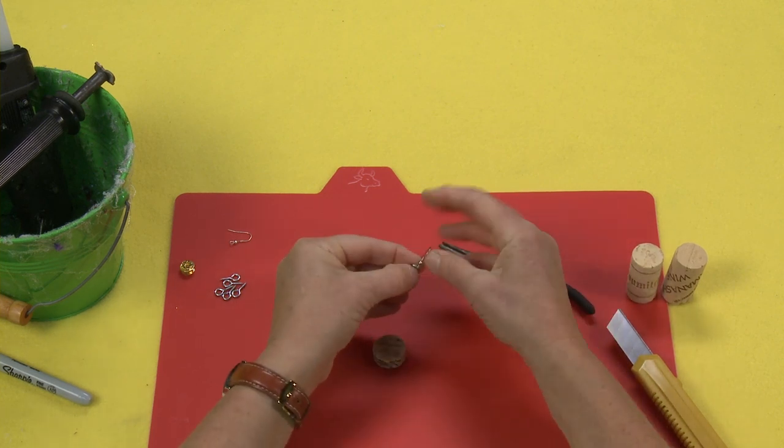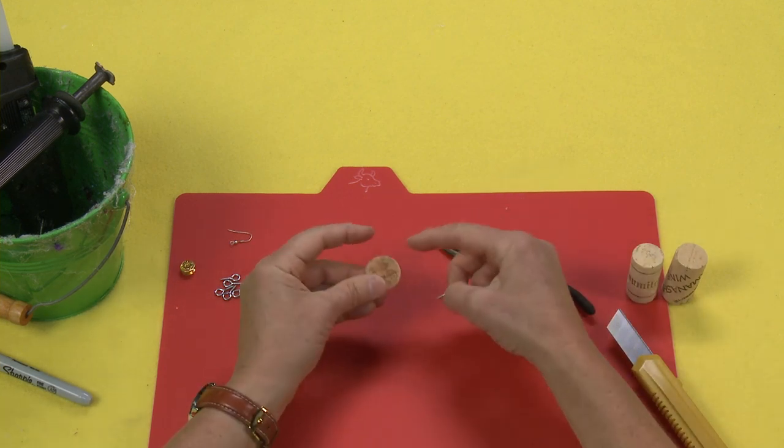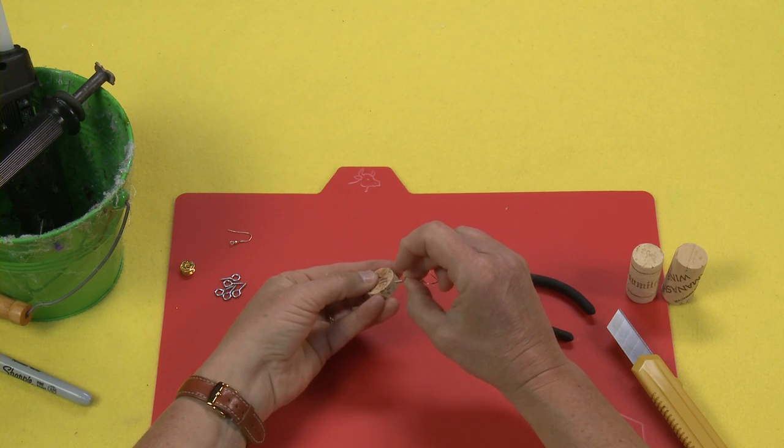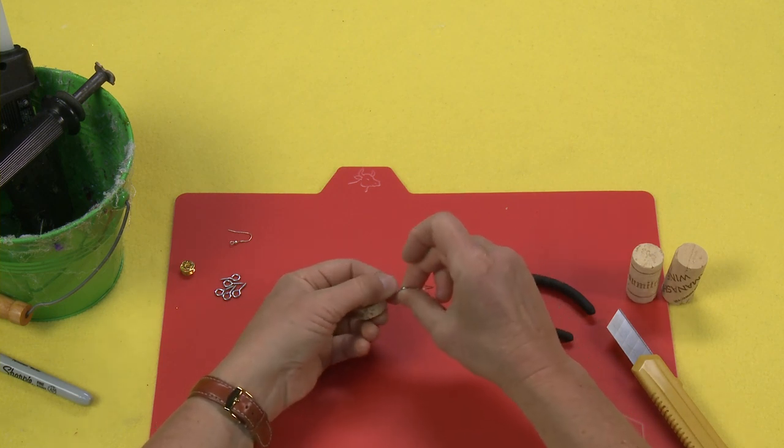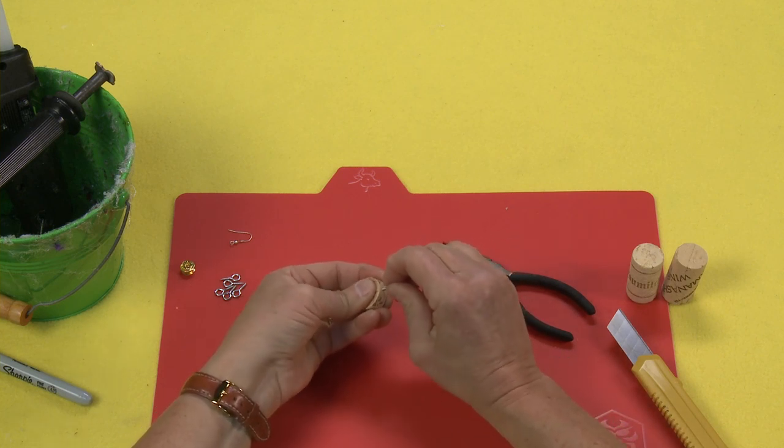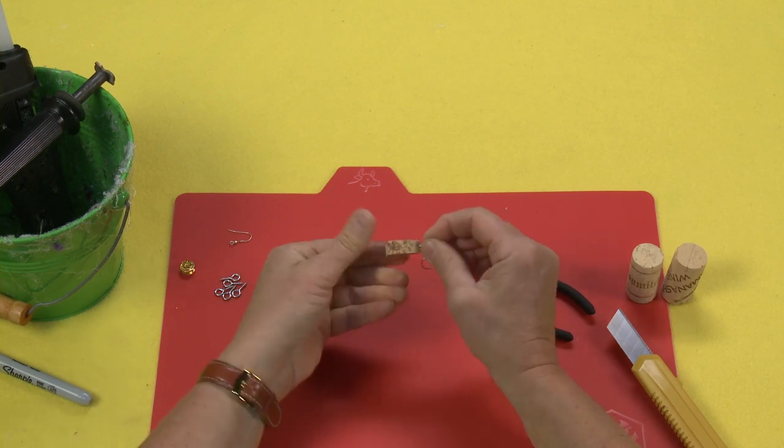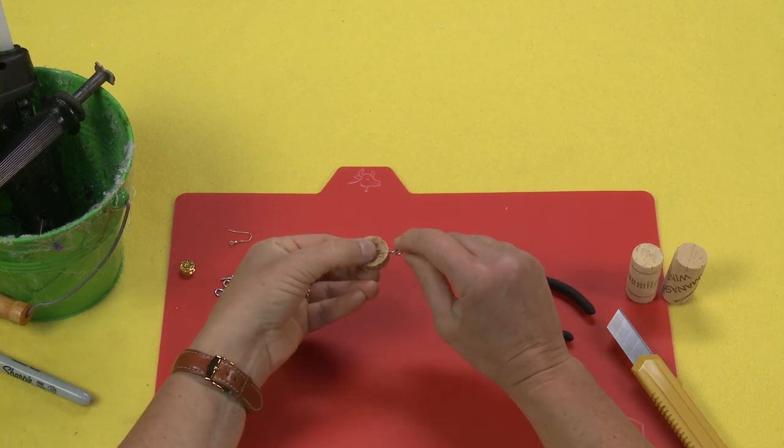And then you're going to want to add this whole fixture to your cork, and it doesn't really matter where you place it on the cork, but you do want to try to aim for the center of the thickness here. And then you're just going to screw that on in so it's nice and tight.